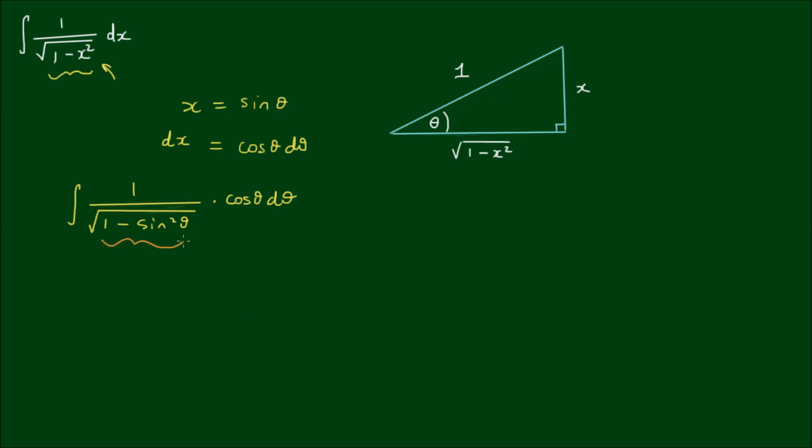So here now we can apply the Pythagorean identity in that if cosine squared of x plus the sine squared of x equals 1, then it follows that cosine squared of x equals 1 minus the sine squared of x.